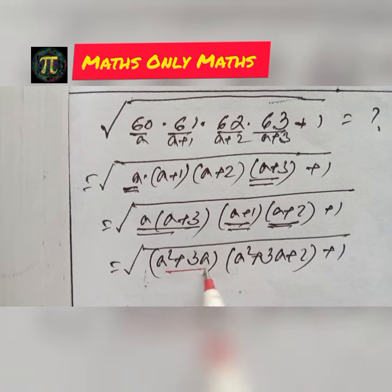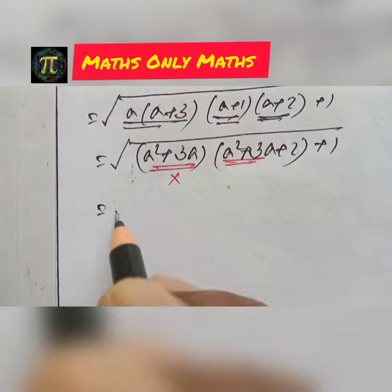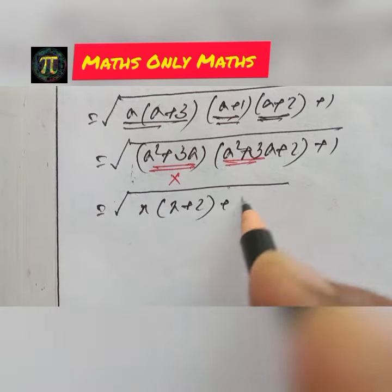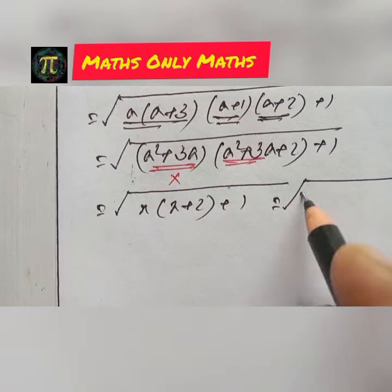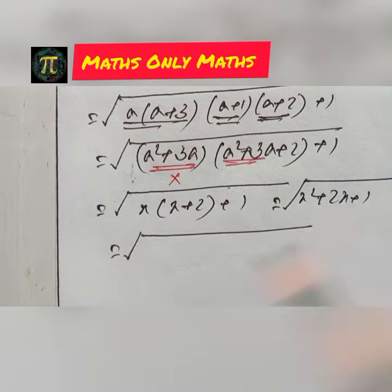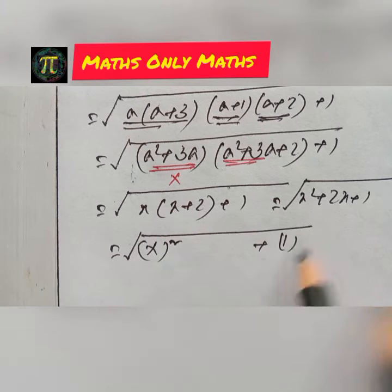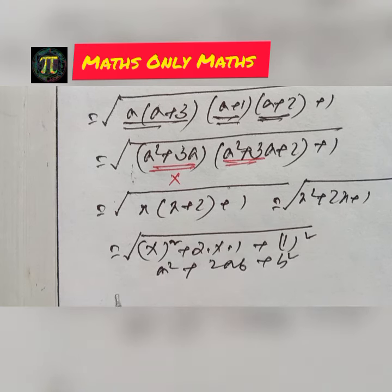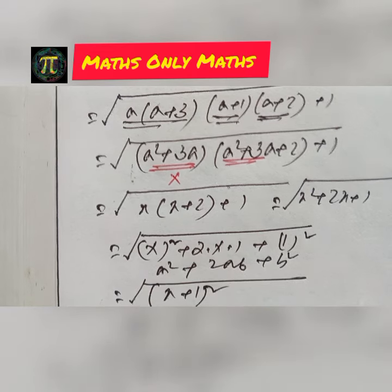Let x = a²+3a. So I get √(x(x+2) + 1) = √(x²+2x+1). Now x²+2x+1 can be written as x²+ 2·x·1 + 1², which matches the identity a²+2ab+b² = (a+b)², giving us (x+1)².